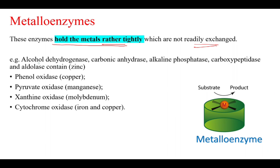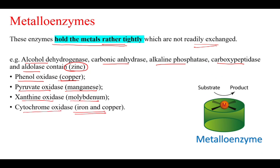Examples of metalloenzymes include alcohol dehydrogenase, carbonic anhydrase, alkaline phosphatase, carboxypeptidase, and aldolase — all of which require zinc. Phenol oxidase requires copper, pyruvate oxidase requires manganese, xanthine oxidase requires molybdenum, and cytochrome oxidase requires iron and copper. These enzymes are active only in the presence of the metals, which are tightly held by the enzymes.